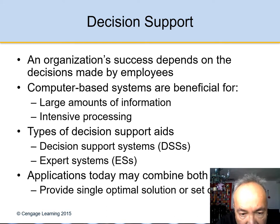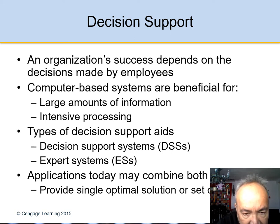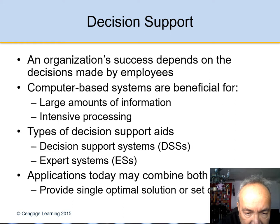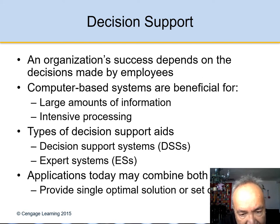Decision support systems are programs that help us make decisions. An organization's success depends on the decisions made by its employees. Computer-based systems are beneficial for large amounts of information and intensive processing. The two main types of decision support aids are the DSS and the expert system.